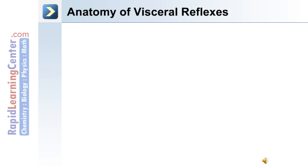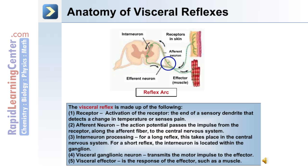The visceral reflex is made up of five components. Number one is the receptor: activation of the receptor, which is the end of a sensory dendrite, detects a change in temperature or senses pain. Number two is the afferent neuron: the action potential passes the impulse from the receptor along the afferent fiber to the central nervous system for a long reflex. Number three is the interneuron: processing for a long reflex takes place in the central nervous system.